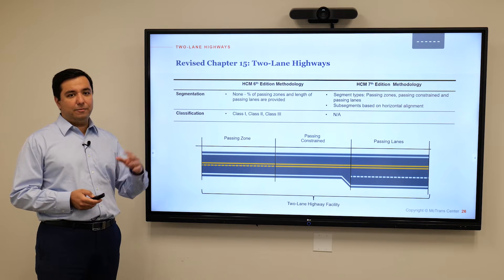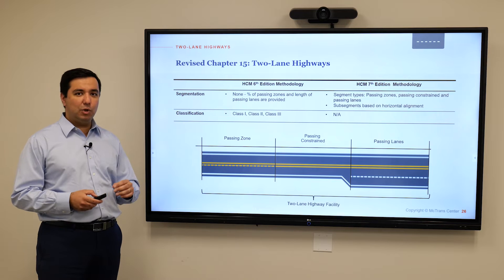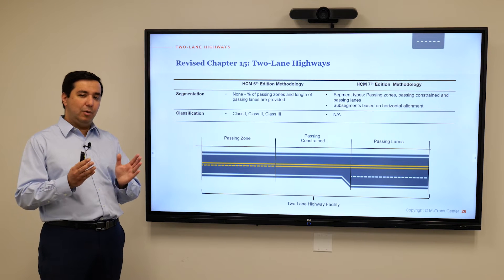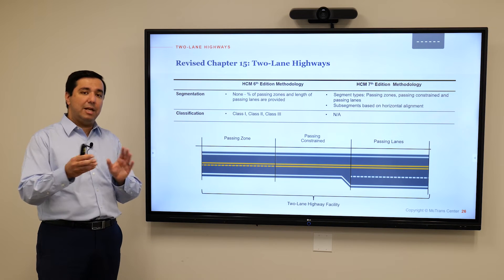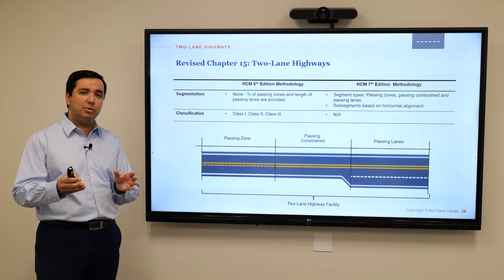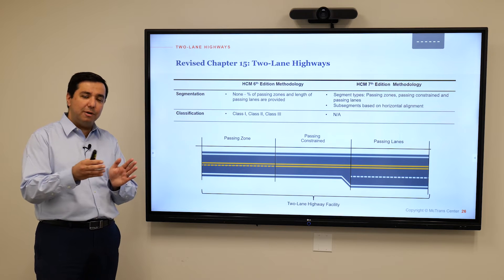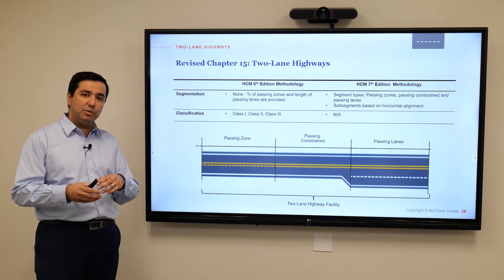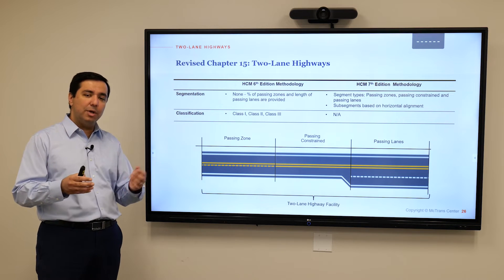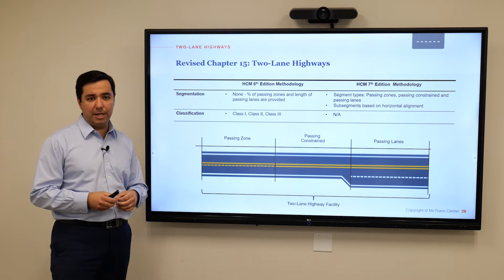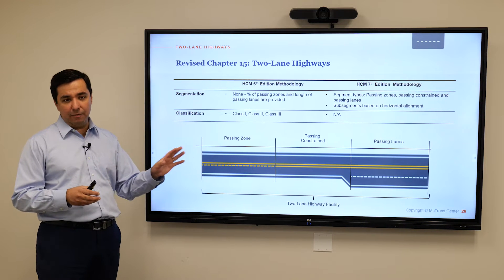In the old method, we were only able to analyze one segment, and within that one segment we needed to specify what fraction of that length was a passing zone, and so on. We don't need any of that anymore.